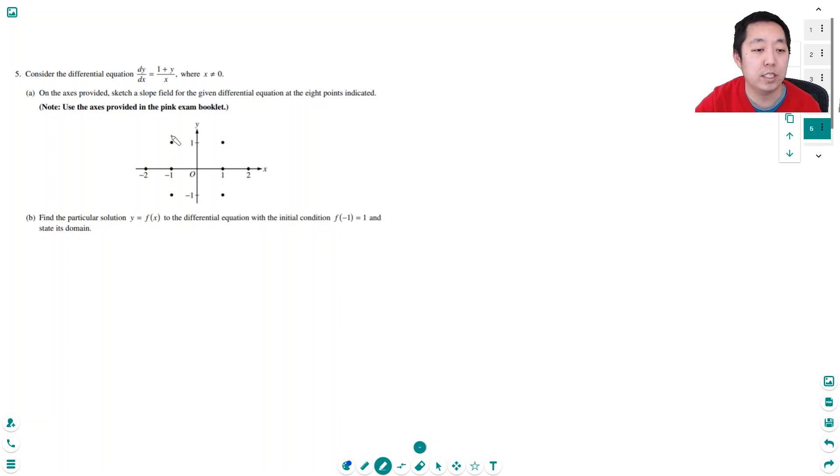Okay, so basically I just have to plug in the points. So this is the point x is negative two and y is zero. So one plus zero is one over negative two. So that's negative one half. Negative one half slope looks kind of like that. Maybe not quite, maybe a little flatter. That's negative one half.